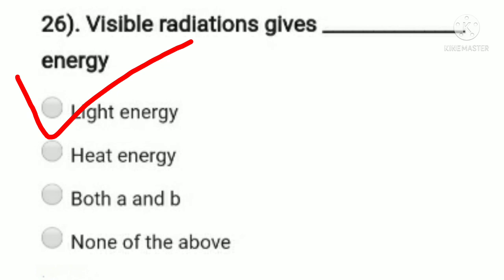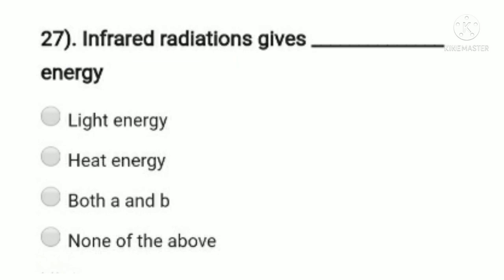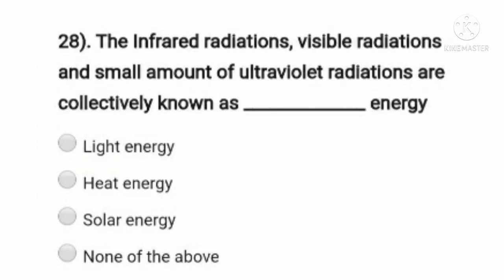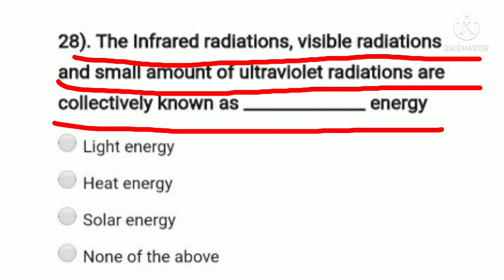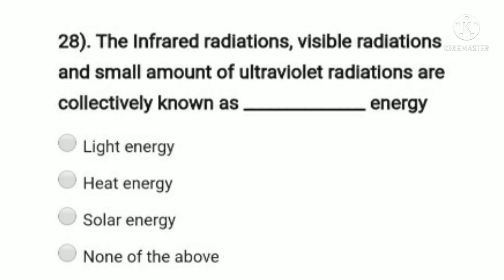Question 27: infrared radiation gives which type of energy? Option A: light energy, option B: heat energy, option C: both A and B, option D: none of the above. Infrared radiation is not visible, so it does not give light energy. Infrared radiation mainly gives heat energy. So option B, heat energy, is the right answer. Question 28: infrared radiation, visible radiation, and a small amount of ultraviolet radiation are collectively known as — option A: light energy, option B: heat energy, option C: solar energy, option D: none of the above. Option C, solar energy, is the right answer.